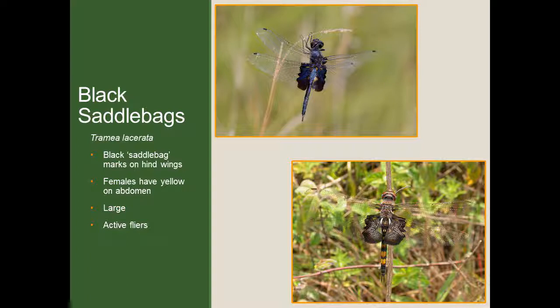Moving on, we have the black saddlebags — probably the second largest species we have in the area, right after the green darner. These are very distinct because they have large black saddlebag-style patches on the base of the hind wings, which you see in both males and females. The males have a bluish-blackish body with no real patterns, while females have a blackish body with some yellow on the abdomen. These are also very active flyers, but very easily identified by those very large black basal patches on the hind wings.